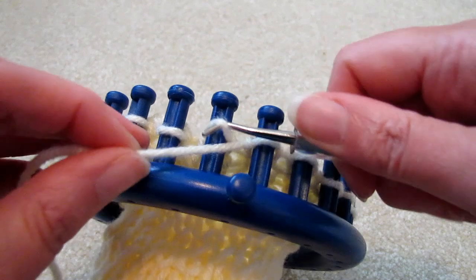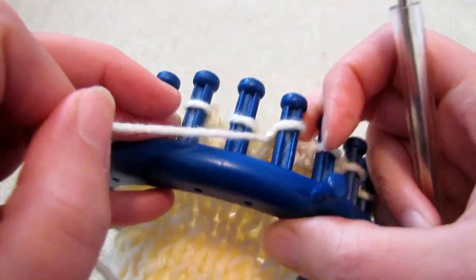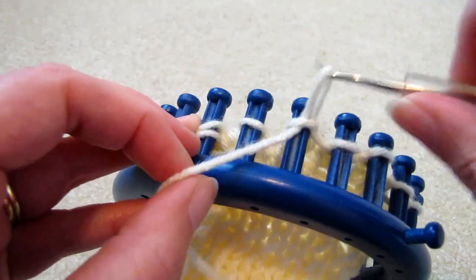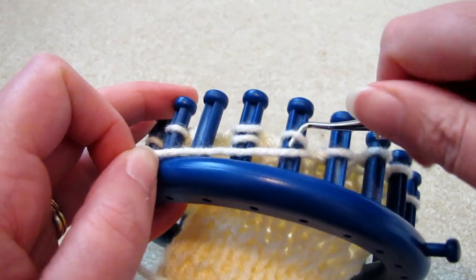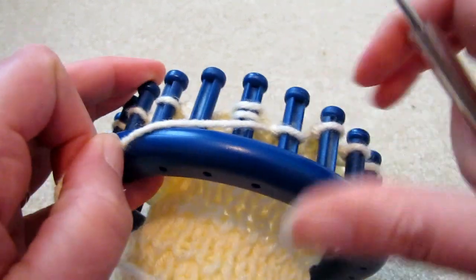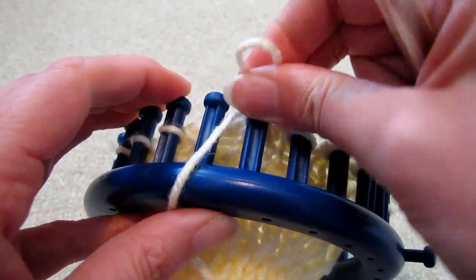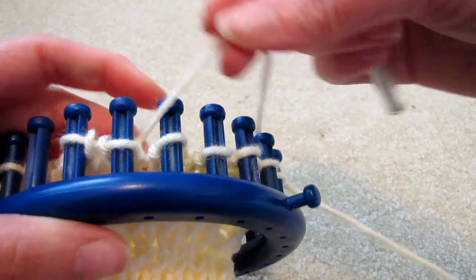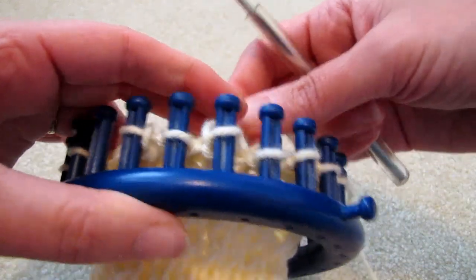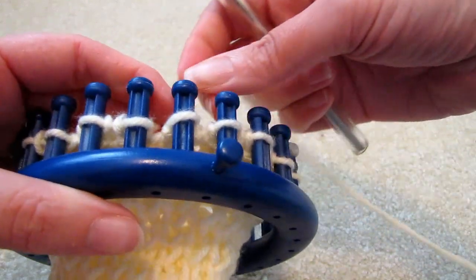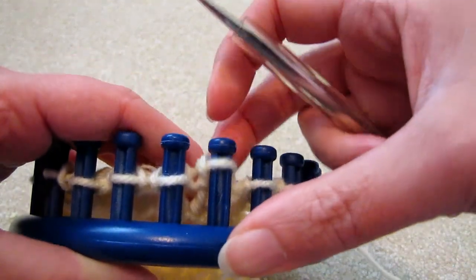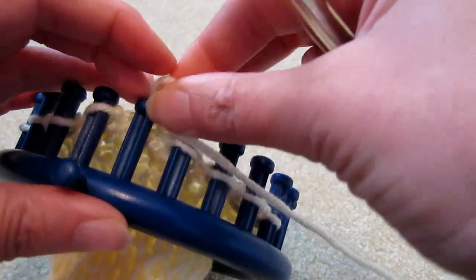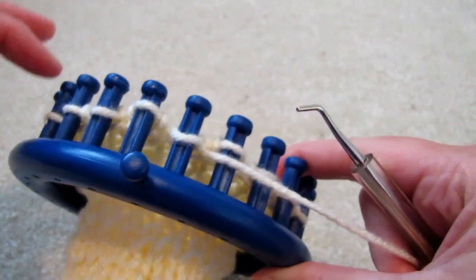And then we'll do the same in the other direction. So purl five, again two together as one, and knit back. And then we'll do this once more. So purl five in this direction, knit back. Then purl five in this direction and knit back.